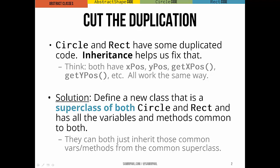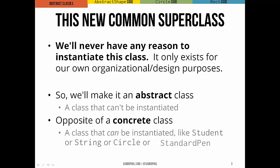To do this, we're going to define a new class that is a superclass of both Circle and Rect and contains all the variables and all the methods that are common in both. Both Circle and Rect are just going to inherit all those common variables and methods from this common superclass. We're never going to have any reason to instantiate this class, so we're going to make it an abstract class. That just means a class that can't be instantiated. You cannot make an instance of an abstract class.